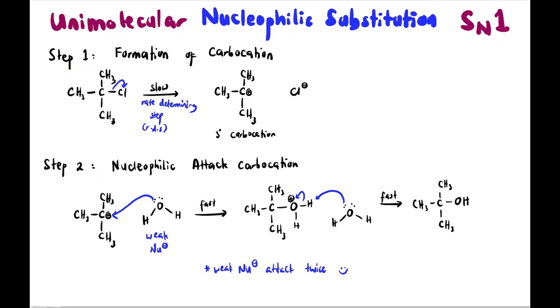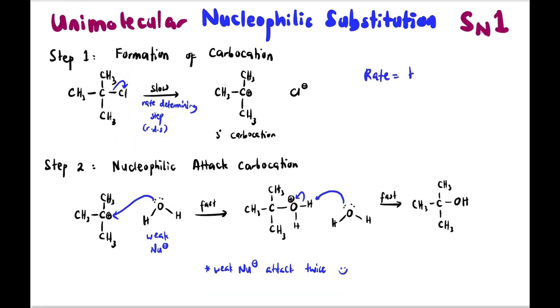Remember, it's called SN1, so it happens one by one, step by step. Step 1 is the step that determines the rate. So if we want to write the rate equation: rate equals K times concentration of haloalkane involved. Only the haloalkane is involved in step 1. In this case, K times bracket CH3 3CCl, based on the structure.